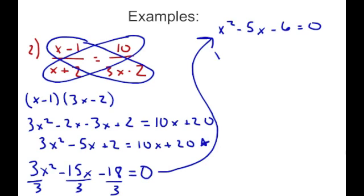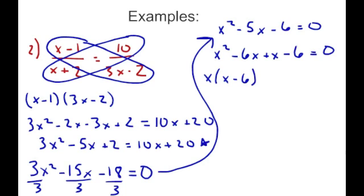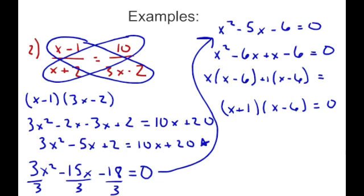Factoring by grouping: x times (x minus 6) plus 1 times (x minus 6) equals zero, giving (x plus 1)(x minus 6) equals zero. Setting each factor equal to zero, x equals negative 1 or x equals positive 6. So we have two solutions — this is essentially a lesson in factoring quadratics applied through proportions.